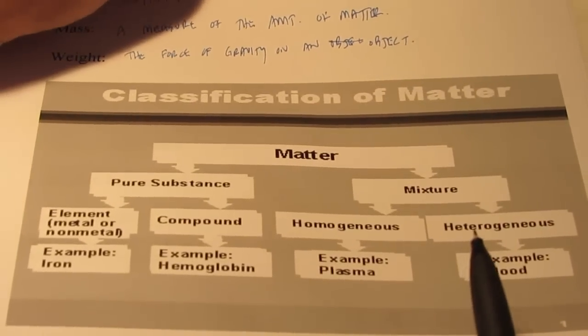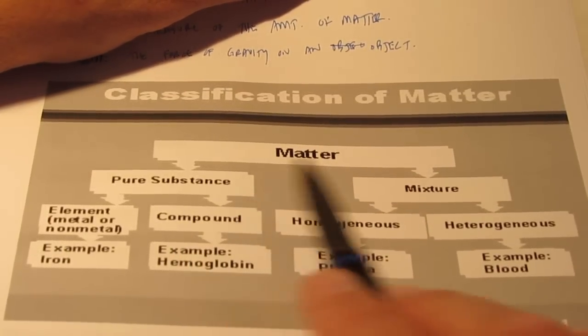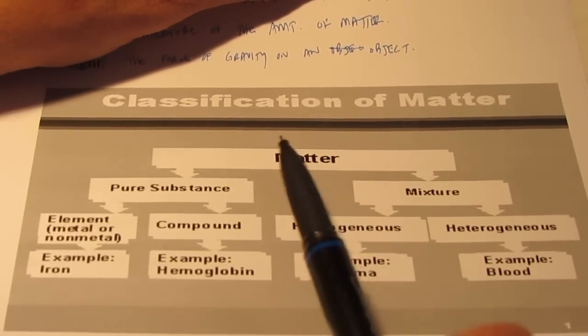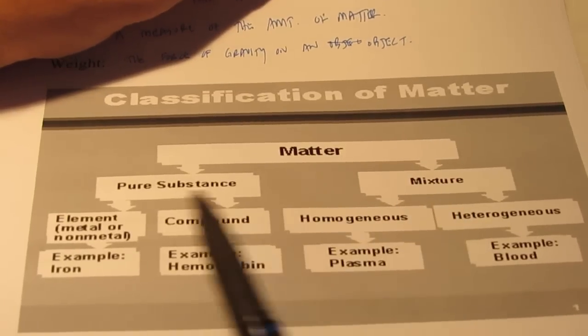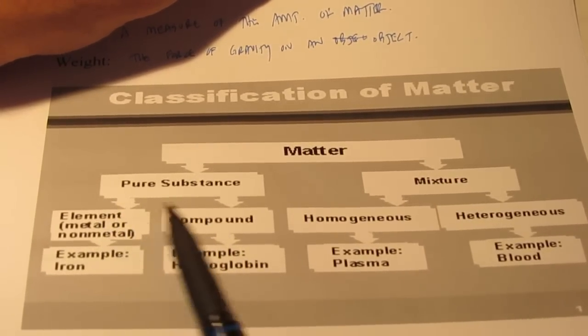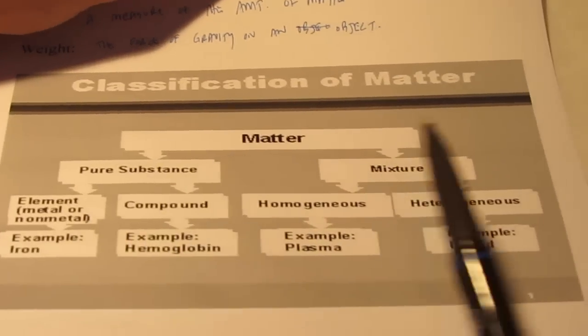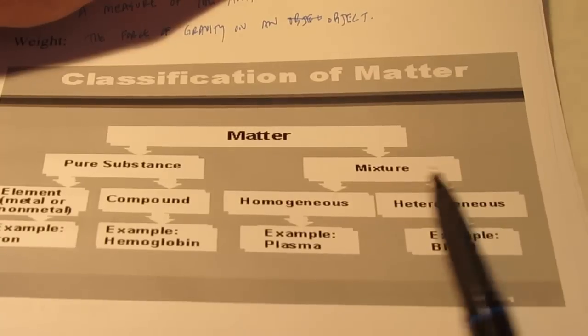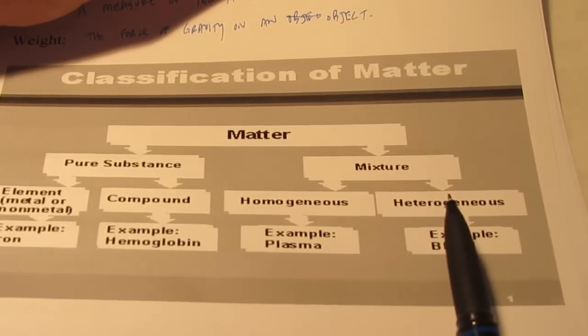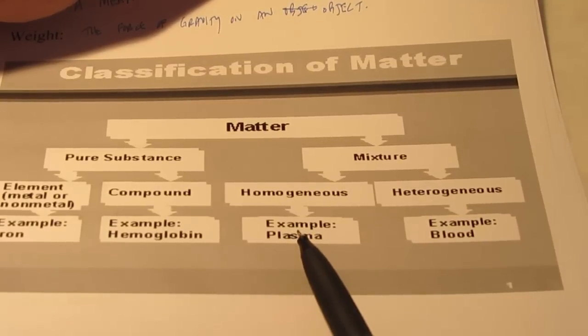Now, we can classify matter. We like to classify things in science. And so we're going to break matter down into a couple of different categories. And now we're going to break those categories down into even smaller categories. We can take all matter, and we can break it down into substances that are pure, and substances that are mixtures. Pure substances are either elements or compounds. Now, in just a few minutes, we're going to define the term element and compound to help you understand the difference between the two. Mixtures can either be homogeneous, sometimes pronounced homogeneous, or heterogeneous. Once again, we are going to define these two terms also.